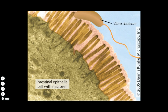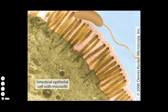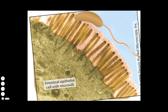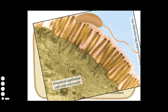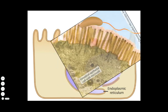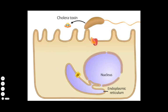In the intestinal tract, cholera vibrios adhere to the surface of cells. The bacterium secretes cholera toxin, which has two types of subunits: five copies of a B subunit, which functions in binding to host cell receptors, and one copy of an A subunit, which exhibits the toxic activity.